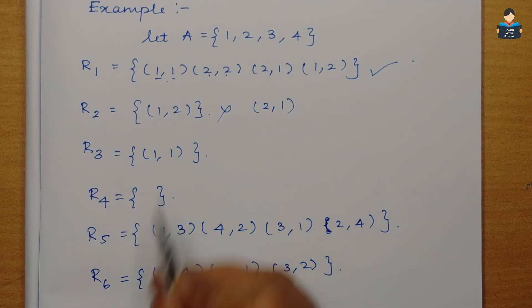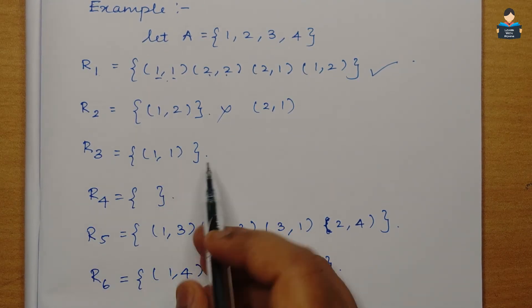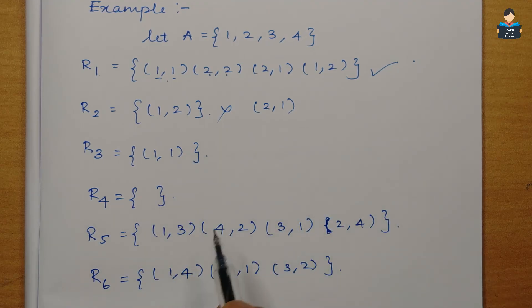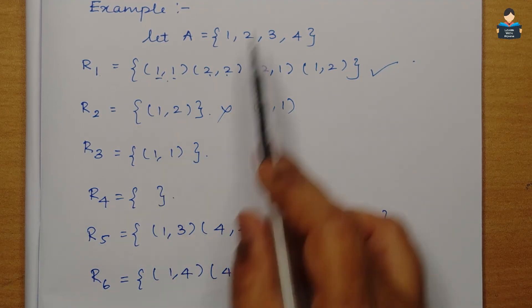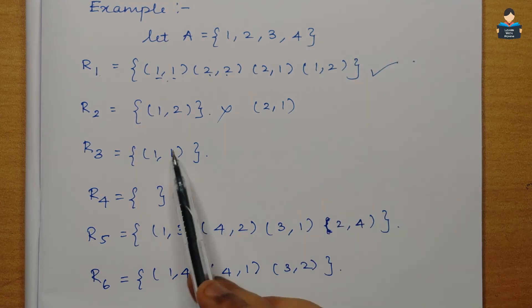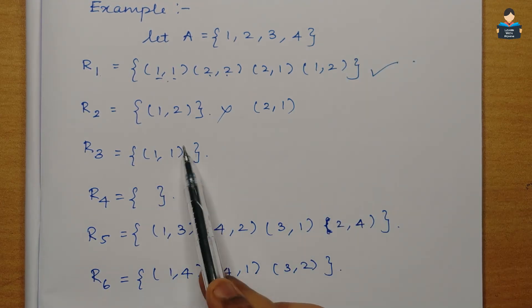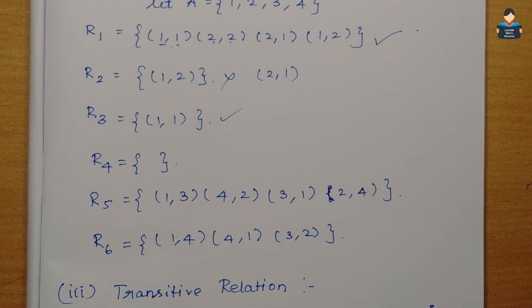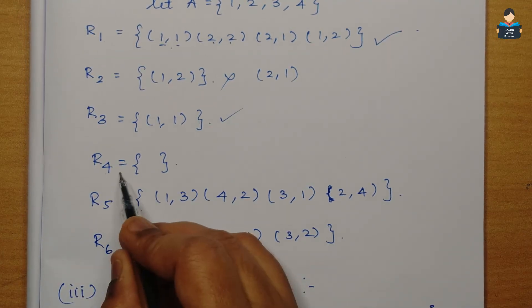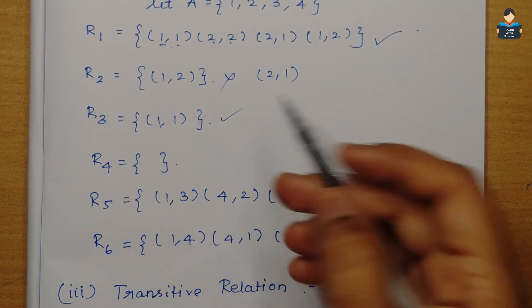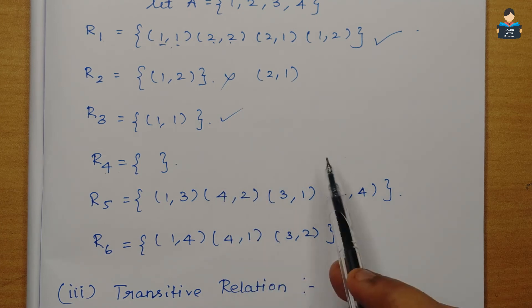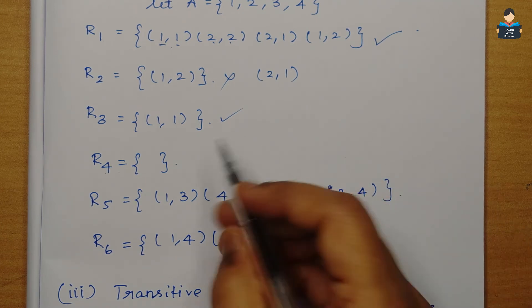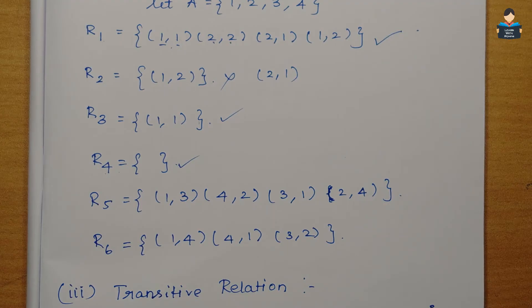Continuing the examples: the relation containing just (1,1) is symmetric. R4, the null set, is also symmetric vacuously. Then examining further relations, some are symmetric and some are not symmetric depending on whether all reversed pairs are present.